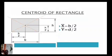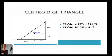The center of gravity of a uniform rod lies at its middle point. The center of gravity of a parallelogram or a rectangle is at a point where its diagonals meet each other. The center of gravity of a circle lies at its center. The center of gravity of a triangle lies at a point where the three medians of the triangle meet.